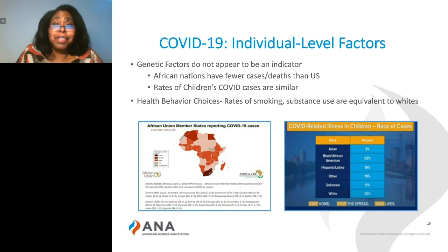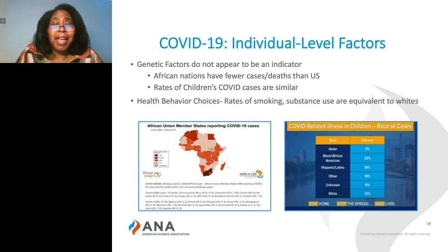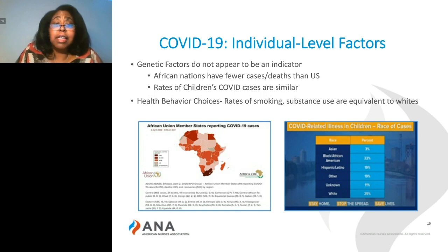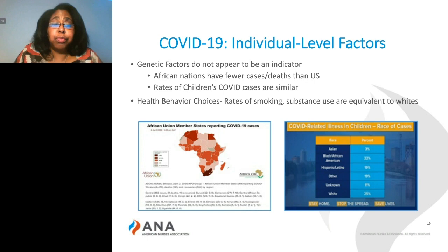We may not have heard as much about Senegal and Ghana and their efforts to lower the curve because we don't generally hear from African nations or developing nations about the positive aspects occurring within their environment. We also know that the recent rates for children's COVID cases — the multisystem inflammatory syndrome that children are exhibiting — are approximately equal, around 20% for cases for both whites, Latinos, and Hispanics. So we don't see the initial indicators that would show genetics as an increased risk.